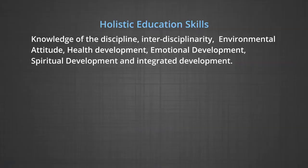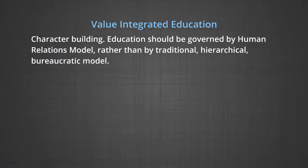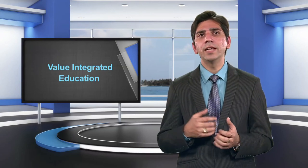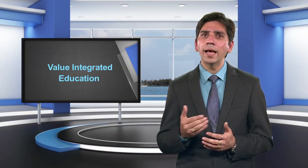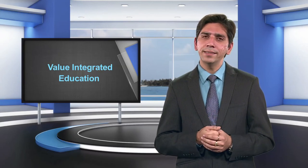Talking about holistic education skills, holistic education should focus on knowledge of the discipline, interdisciplinarity, environmental attitude, health development, emotional development, spiritual development and integrated development. When we talk about value-integrated education, we can say that education should be character building, governed by a human relations model rather than by a traditional hierarchical bureaucratic model. Education should create global communities for sharing through reflective dialogues. Higher education should harness the power of science and technology for realizing cultural excellence.